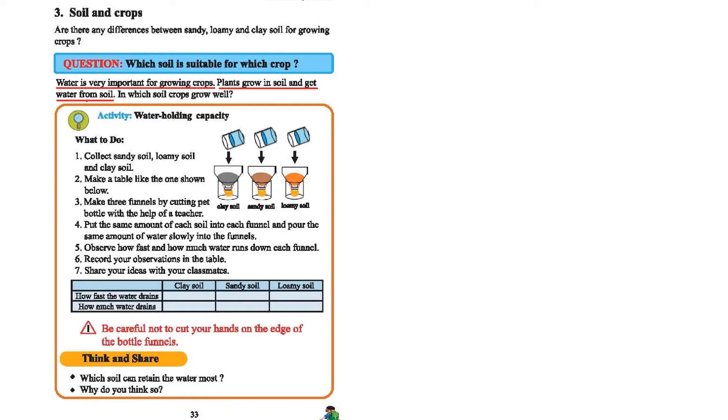Are all the soils the same for growing crops? We know that they are different in their characteristics. So what are the differences in growing crops among those different soils? The first question is: which soil is suitable for which crops? That means we are going to learn about growing crops and their characteristics.